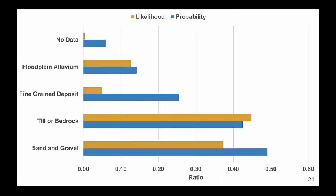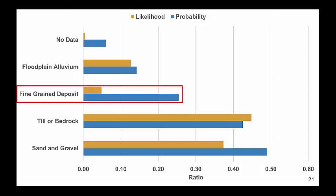This figure compares the likelihoods and probabilities for various categories of geology. Blue represents probability and orange represents likelihood. Consider fine-grained deposit: the probability is the proportion of total fine-grained deposit that is built, while the likelihood is the proportion of total built that is on fine-grained deposit.